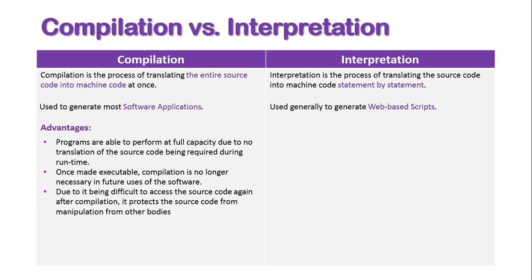The advantages of compilation are that programs are able to perform at full capacity, as there is no translation of the source code required at runtime — it's already been translated, so there's no more translation occurring when it's running. Once made executable, compilation is no longer necessary in future uses of the software, so the next time you start up the program, it's already been compiled and translated once, and you don't need to do the process again.